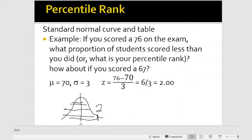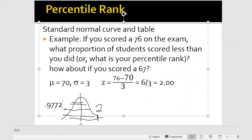So 0.9772 would be our answer here. That's a proportion — roughly, if this was you, you scored better than 98% of your peers in the class.